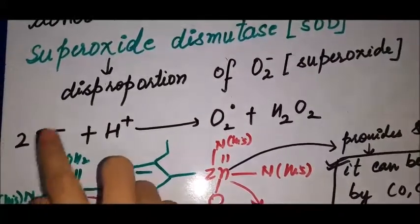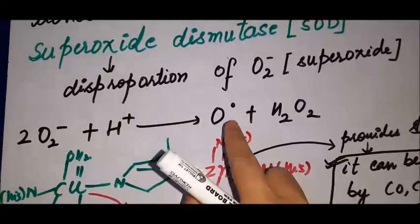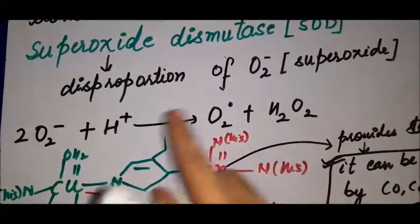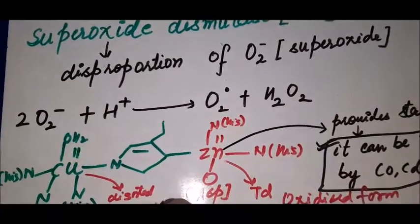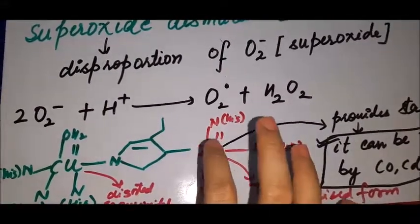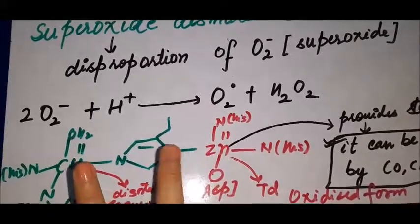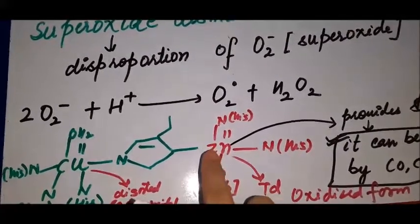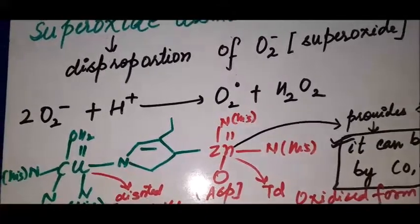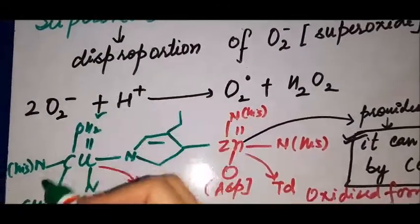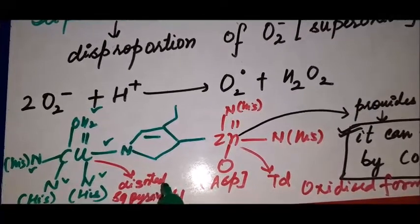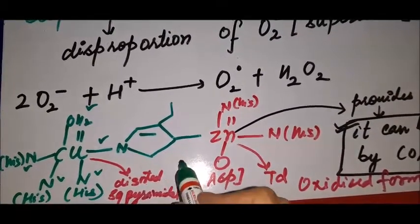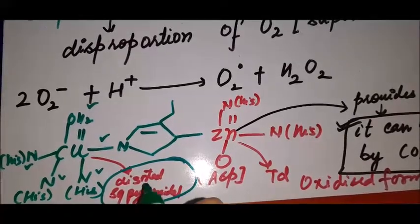The reaction is: O2⁻ plus H⁺ gives O2 and H2O2. Now looking at the structure, you can see two metals — one is copper and one is zinc. The copper center is distorted square pyramidal. This is a very important structural point.